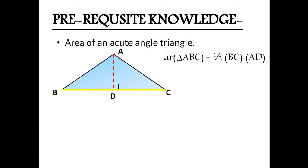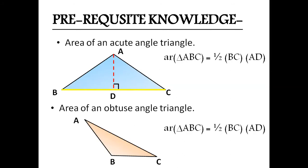Next, we will see area of an obtuse angle triangle. Triangle ABC is an obtuse angle triangle. Its area is equal to half into BC into AD which is perpendicular to the base. AD is height of the obtuse angle triangle which is outside the triangle.